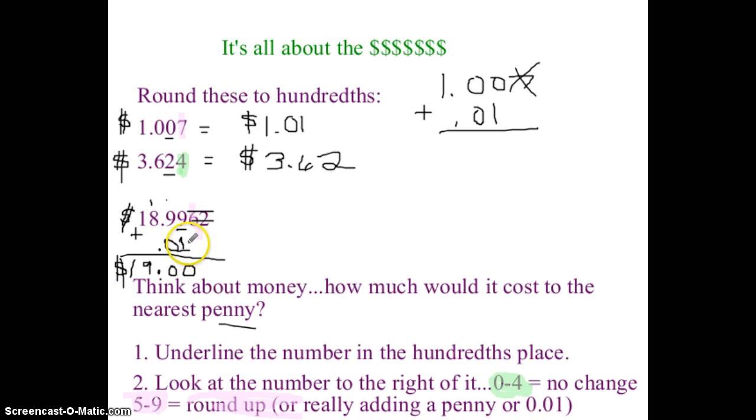For some reason, people like to put this as like $18.10 or $19.10. No. If something costs 18.99, it basically costs $19. You're either adding a penny or in other words, you're adding one hundredth or you'll leave it alone.